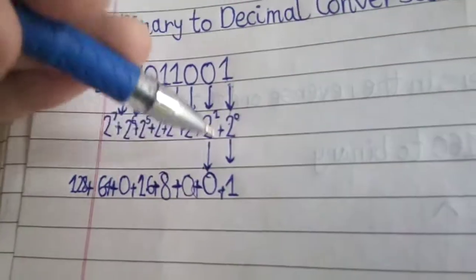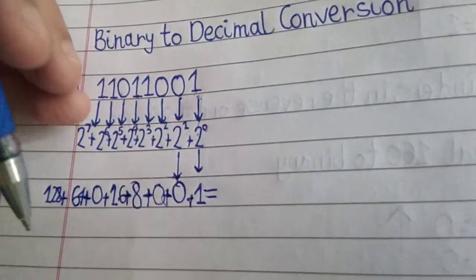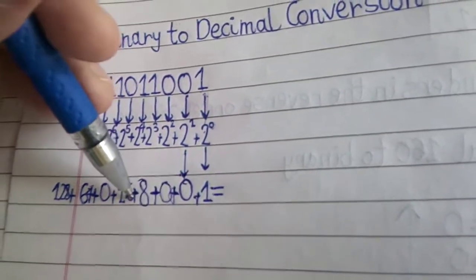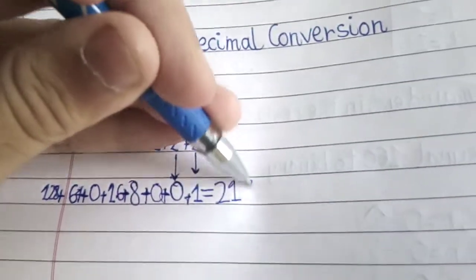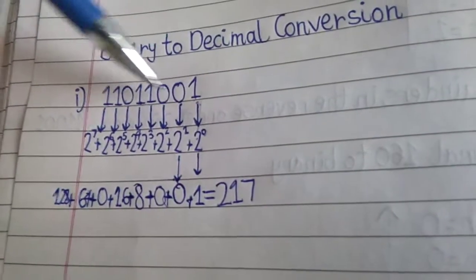So, like this we have added all the numbers. And we have to find the sum. So, its sum is, we have to just add 128 plus 64 plus 24. So, we get the sum as 217. So, this 217 becomes the decimal number of this binary number.